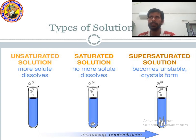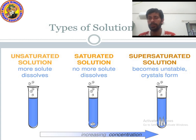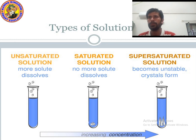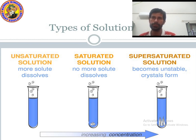And super saturated solution — what is the meaning of super saturated solution? It is a solution which becomes unstable and forms crystals. This is known as super saturated solution. I hope you understood all three: saturated solution, unsaturated solution, and super saturated solution.